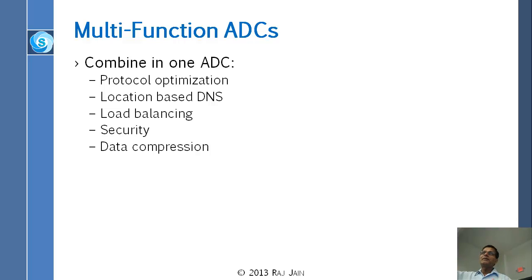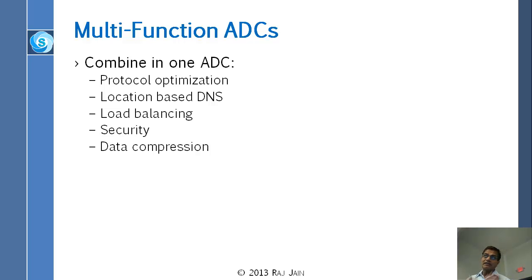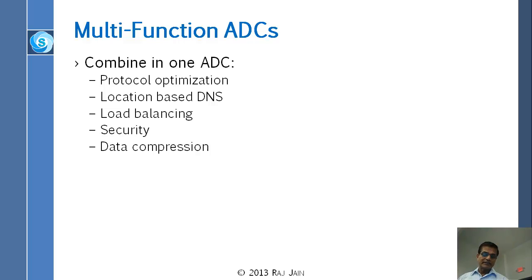We need each function — compression, firewall, ADC — on the path. So if everything is going to be in software, we might as well put them into one software piece and do many things. That brings us to multifunction ADCs — one ADC will do lots of stuff. By doing all of that together, we could combine data compression, security, load balancing, and protocol optimization like TCP optimization, all into one software piece. Nowadays they are selling ADCs which are not just single-function anymore.